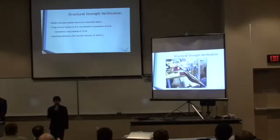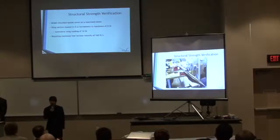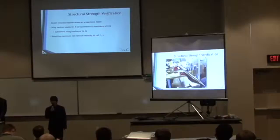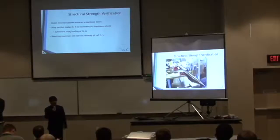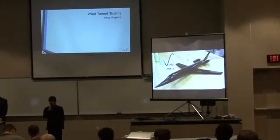Before this model was allowed to proceed to wind tunnel testing, a structural strength fabrication test had to be performed first. The model was mounted upside down on a steel beam, then loaded in eight-ounce increments until non-linear wing bending was observed. This bending was observed at about eight pounds, yielding a symmetric wing loading of 16 pounds. This resulted in a maximum test velocity of 162 feet per second. The secondary screen shows a picture of that test. Now I'll introduce Macy for wind tunnel testing.